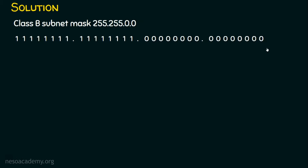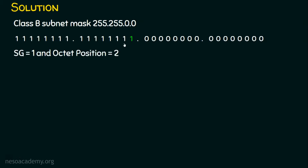Where is the first zero we are encountering? The first zero is in the second octet. The decimal place of this first zero, moving from right to left, is exactly one. So the subnet generator is one and the octet position is two, because this subnet generator is in the second octet.